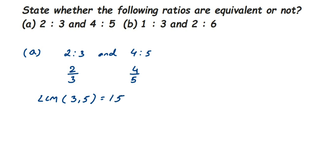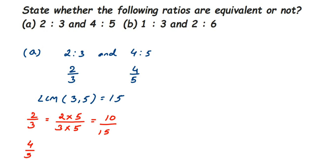We change the denominator of both numbers by finding equivalent fractions. For 2/3: to get 15 in the denominator, we multiply 3 by 5, so we multiply 5 in the numerator and denominator to get 10/15. For 4/5: to get 15 in the denominator, we multiply 5 by 3, so we multiply 3 in the numerator and denominator to get 12/15.